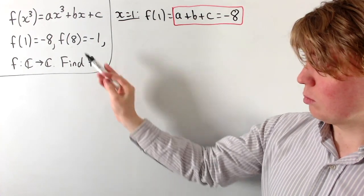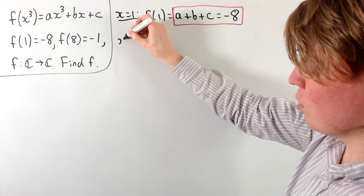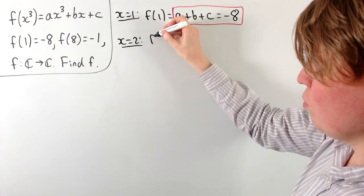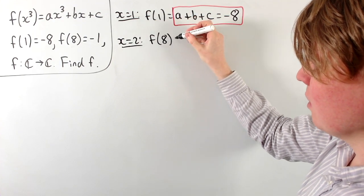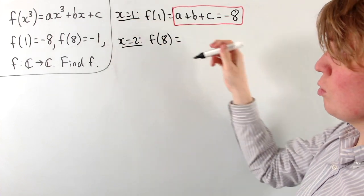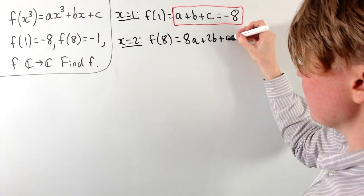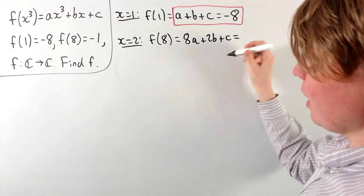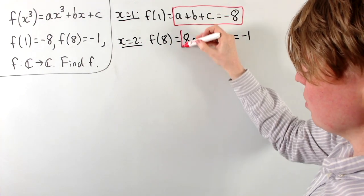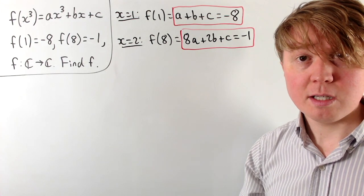We can do the same thing with the known value f(8). We substitute x = 2, so 2 cubed gives us f(8). We get a times 2 cubed plus b times 2 plus c, which is 8a + 2b + c, and f(8) = -1. So we have another equation linking the values of a, b, and c.